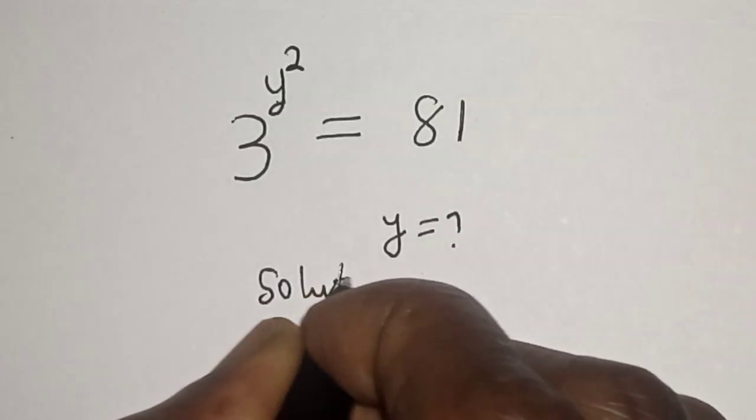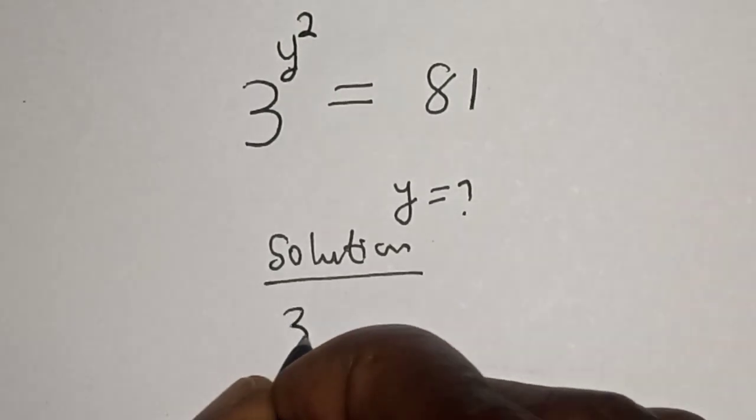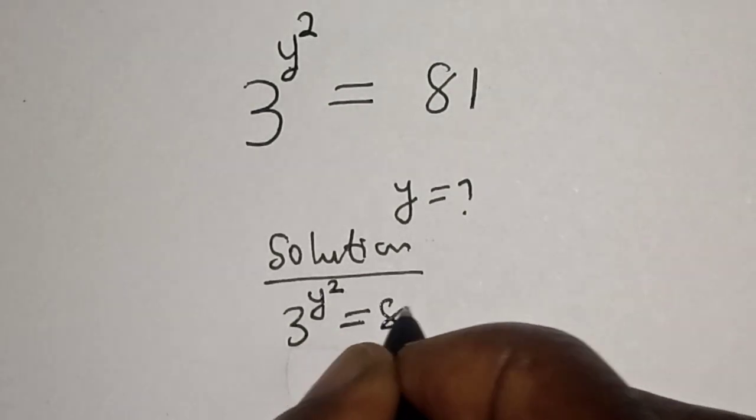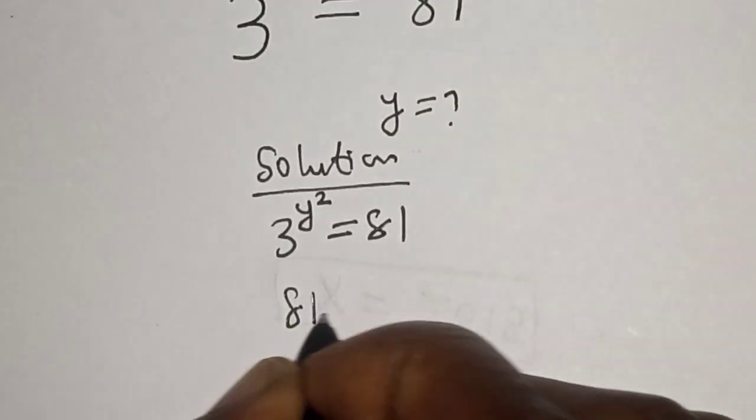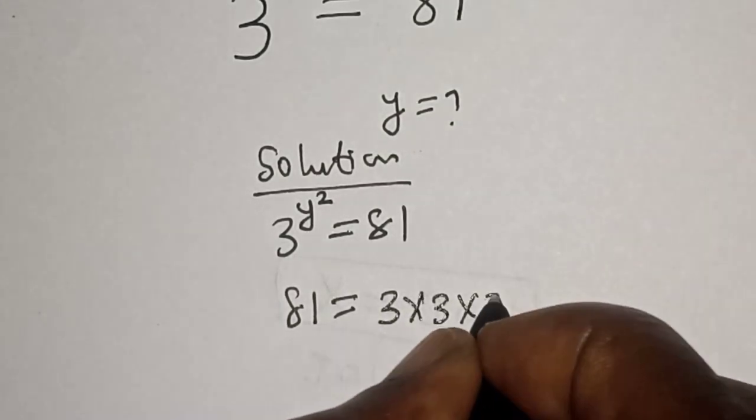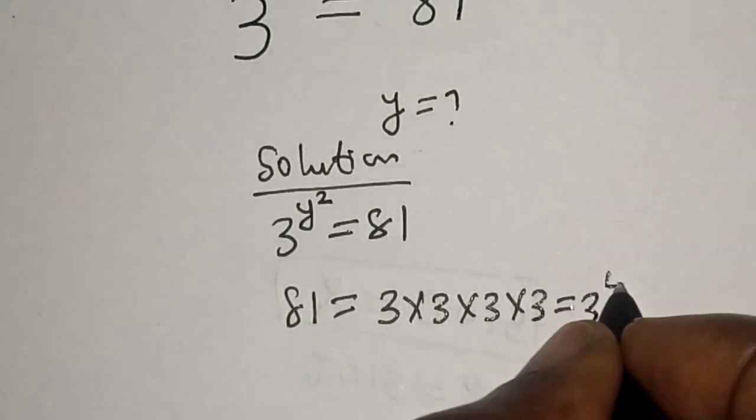Solution. We have 3 raised to power y square is equal to 81. Then remember that 81 is equal to 3 times 3 times 3 times 3, which is equal to 3 raised to power 4.